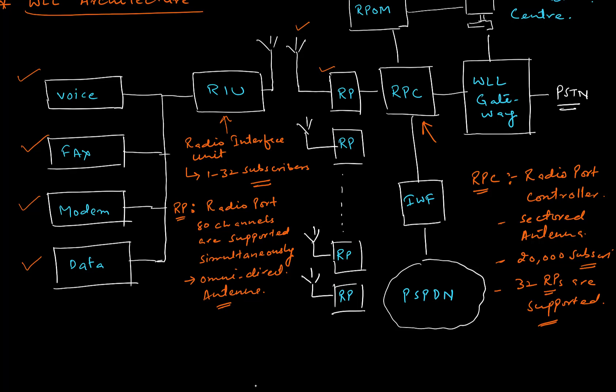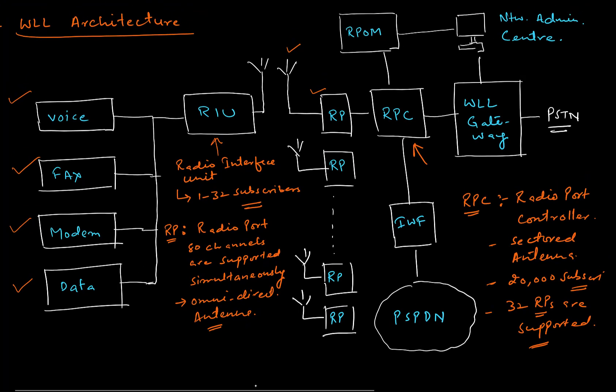You can resemble this diagram with the basic architecture of GSM or GPRS. The RP works as the base station, and the RPC works as the MSC, handling all the switching. All radio mechanisms are controlled by the Radio Port Controller, which has a sector antenna with a directional range and supports around 20,000 subscribers and 32 radio ports.